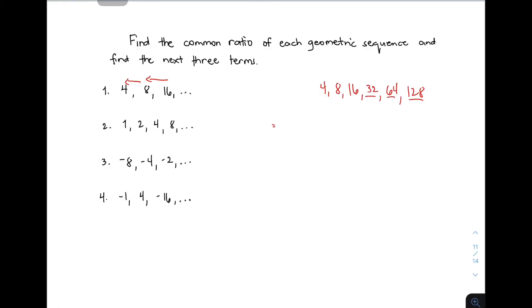For number 2, we have 1, 2, 4, 8. Let's verify: r = 2 ÷ 1 = 2, then r = 4 ÷ 2 = 2, and 8 ÷ 4 = 2. The common ratio is 2. To find the next three terms: 8 times 2 is 16, 16 times 2 is 32, 32 times 2 is 64. The next three terms are 16, 32, and 64. Let's move on to item number 3.